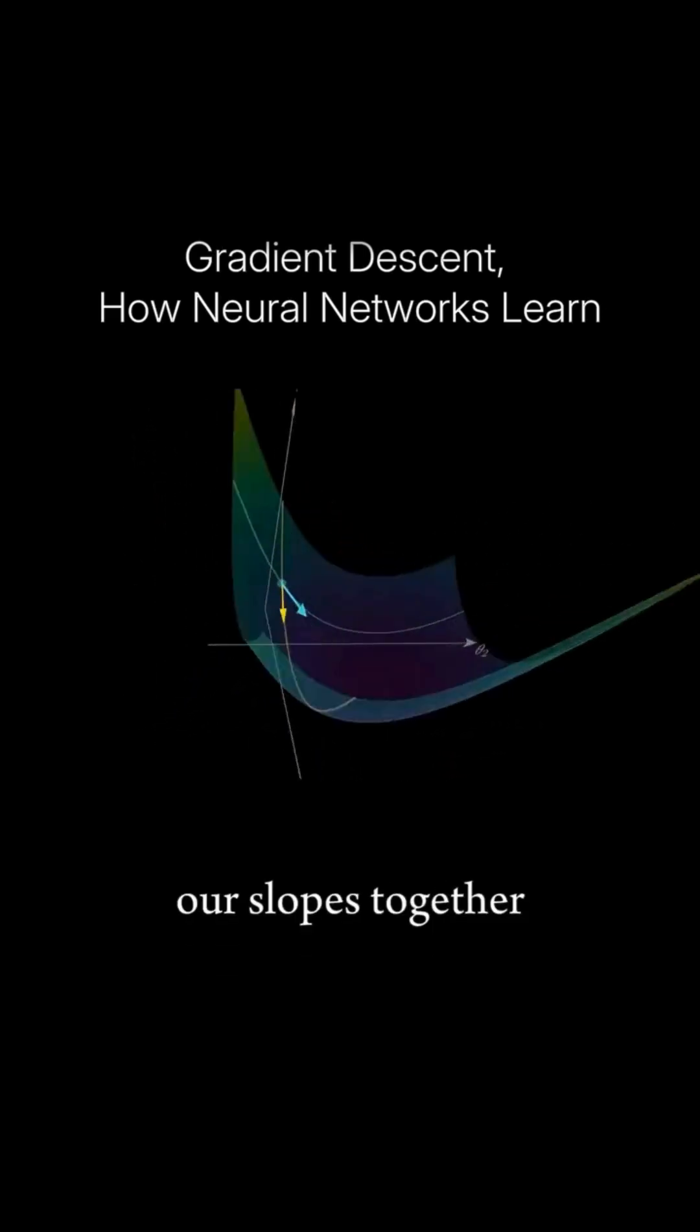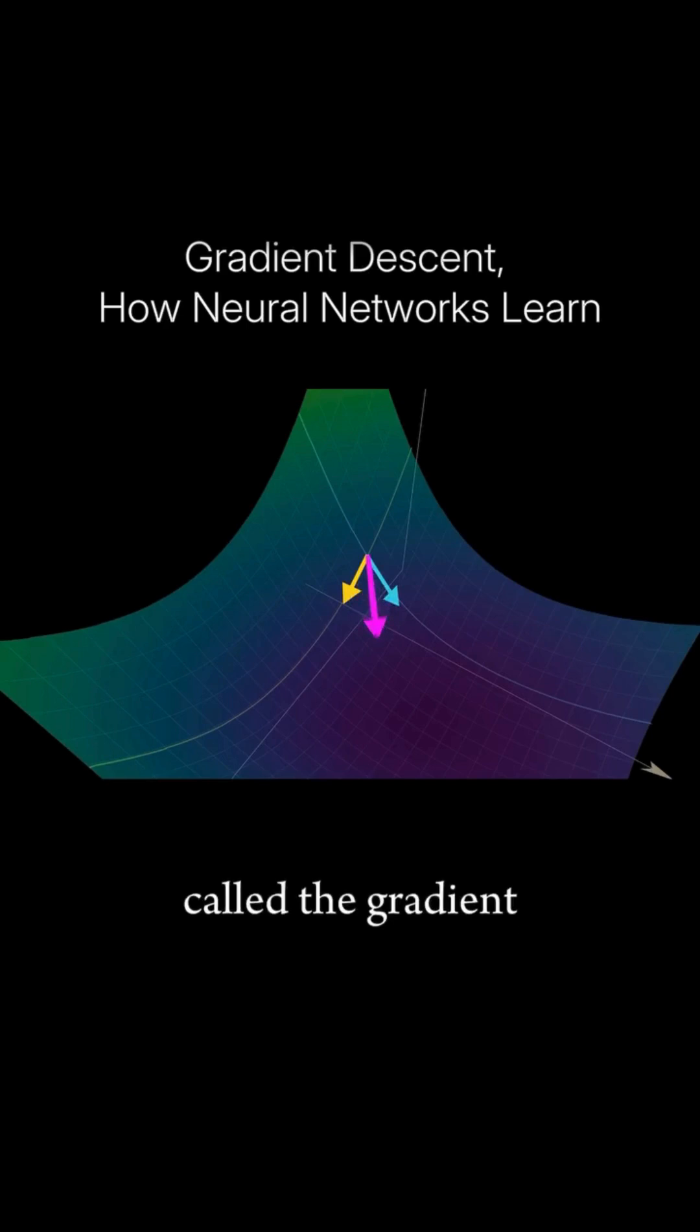From here, we can put our slopes together into a single vector called the gradient, which acts like a little compass that points us downhill.